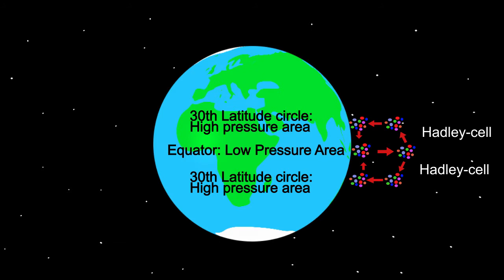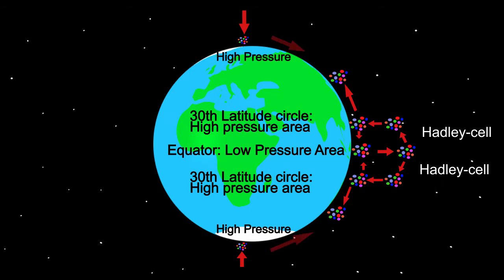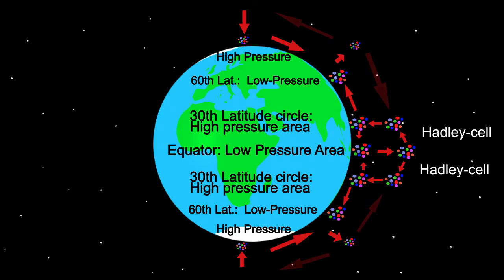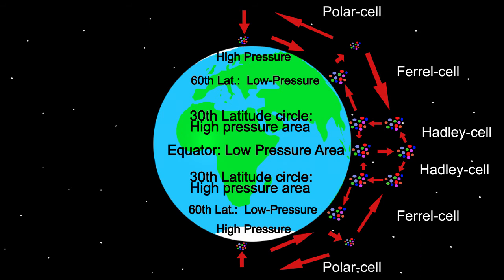Now let's look at the air flow of the whole world. Air which sinks around the 30th latitude circle doesn't only flow to the equator but also to the 60th latitude circle. At the north and south poles it is very cold, which causes the air to cool and shrink. The weight of the air increases and it sinks, causing a high pressure area. From the poles, air flows over the surface through the 60th latitude circle, where the cold polar air collides with the airflow coming from the 30th latitude circle. This causes the air to rise, creating a low pressure area. The airflow between the 30th and 60th latitude circle is called the Ferrel cell, while the airflow between the 60th latitude circle and the polar regions is called the polar cell.